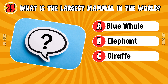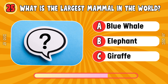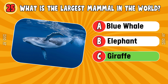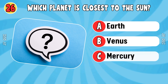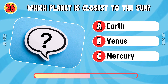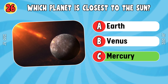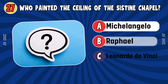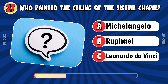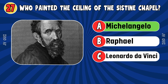What is the largest mammal in the world? Blue Whale. Which planet is closest to the sun? Mercury. Who painted the ceiling of the Sistine Chapel? Michelangelo.